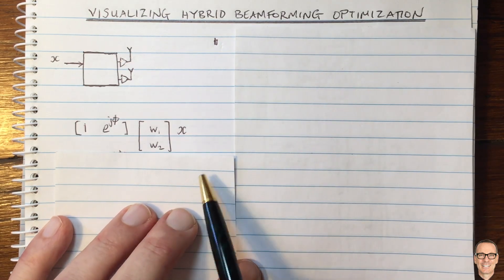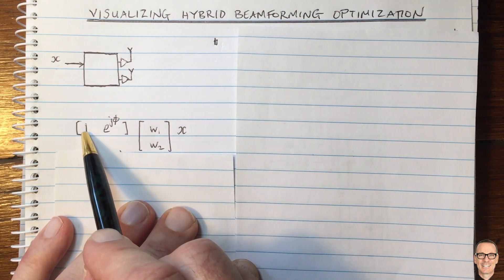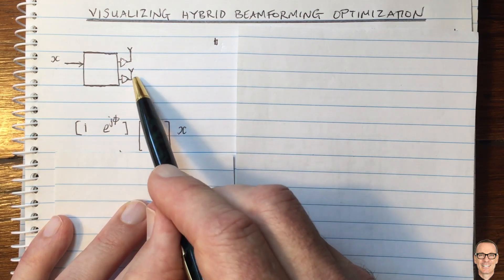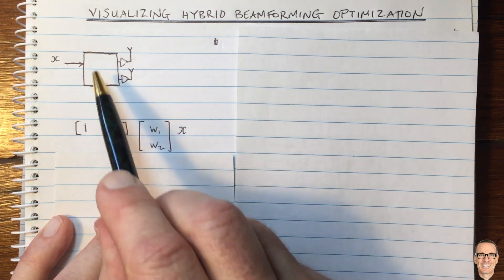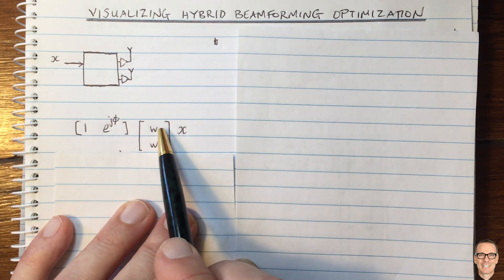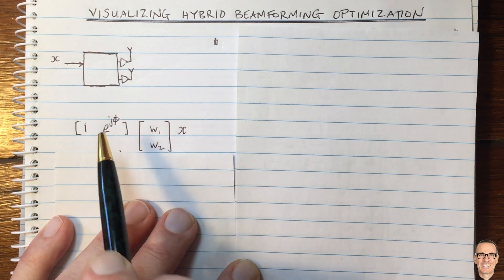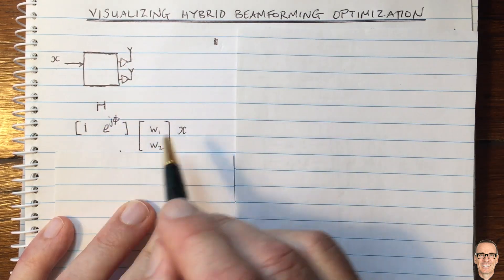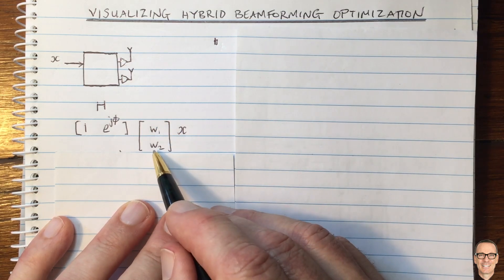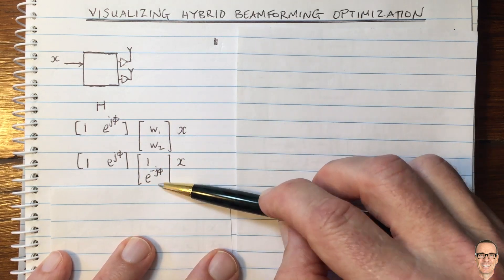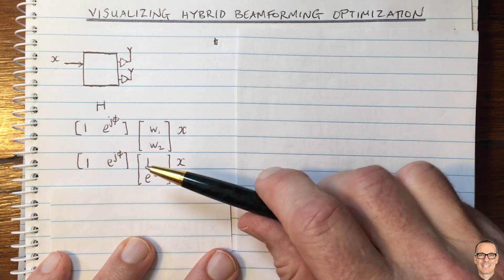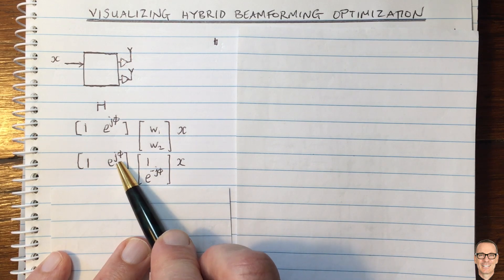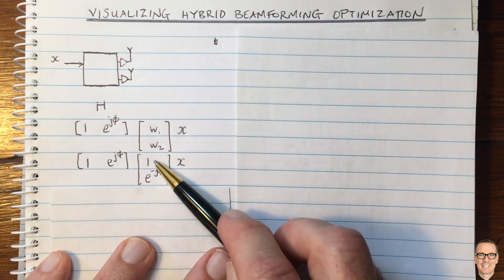We can represent this in matrix form. We've got our path phase from antenna one, giving that a reference of zero phase. Off antenna two, there will be a phase difference due to the angle that user is at. What we can do in our transmitter is take our constellation point and multiply it by phase rotators to pre-cancel the phase rotation that's going to happen from the channel. Here we've got the channel matrix H and our pre-compensation vector.